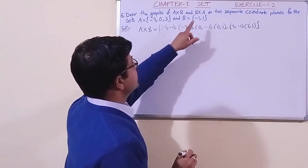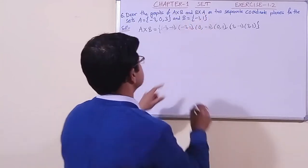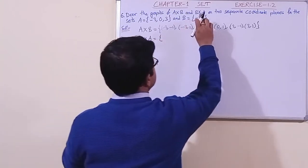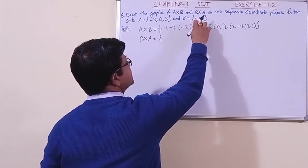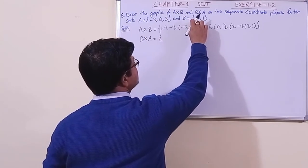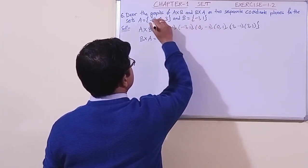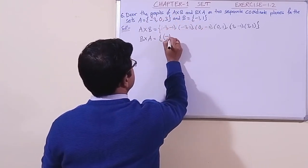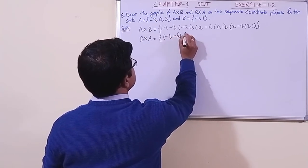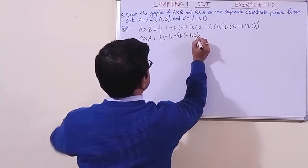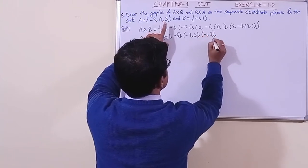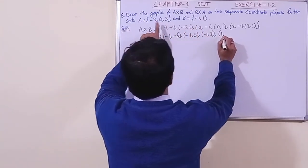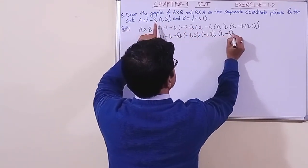Now we shall find B cross A. For B cross A, these are the x-coordinates and these are the y-coordinates. Minus 1 should be paired with minus 3, giving minus 1 minus 3, then minus 1 with 0, and minus 1 with 3.